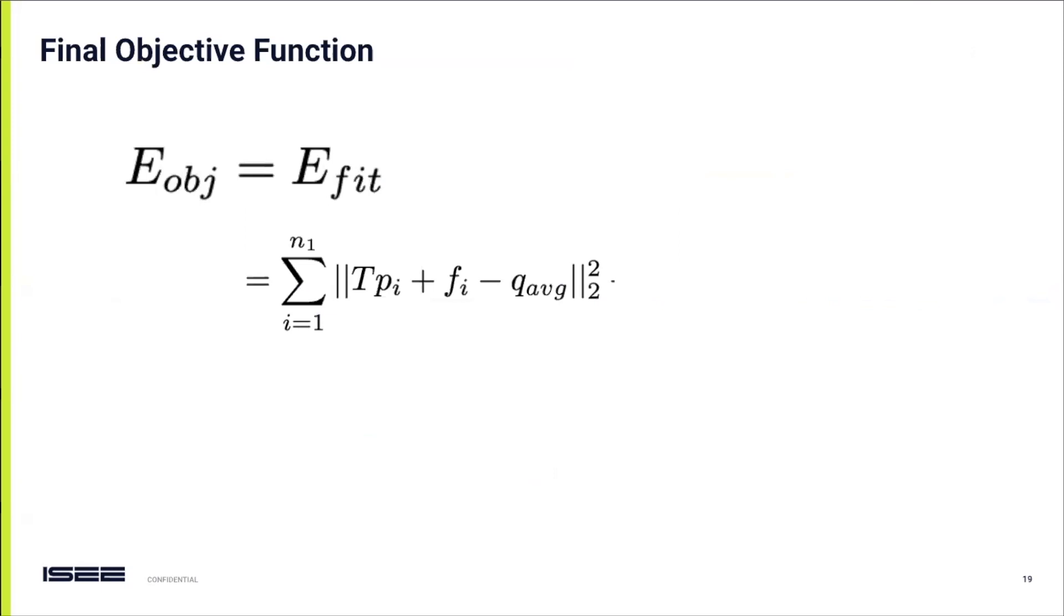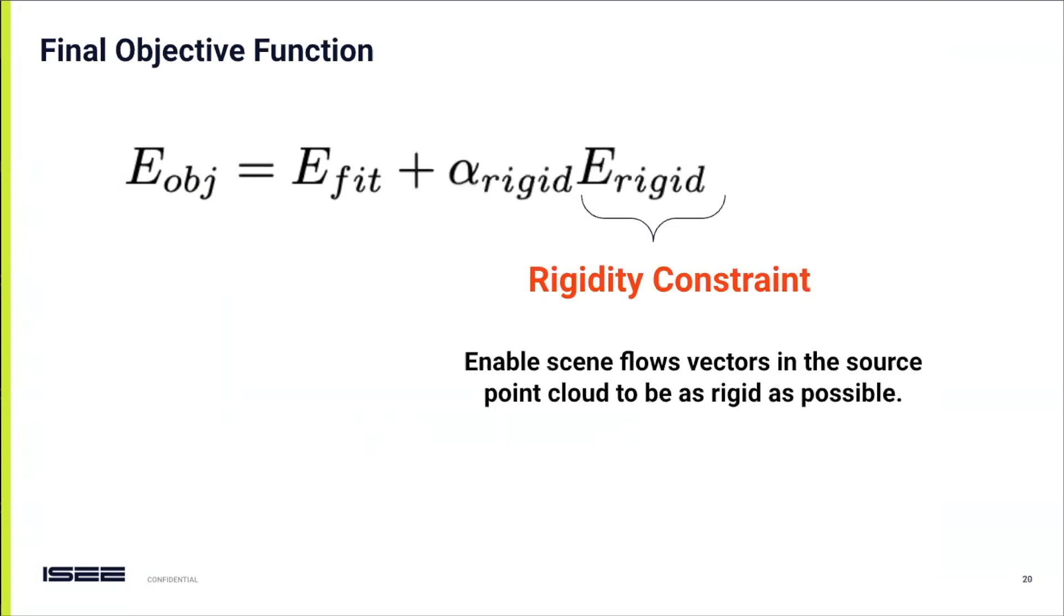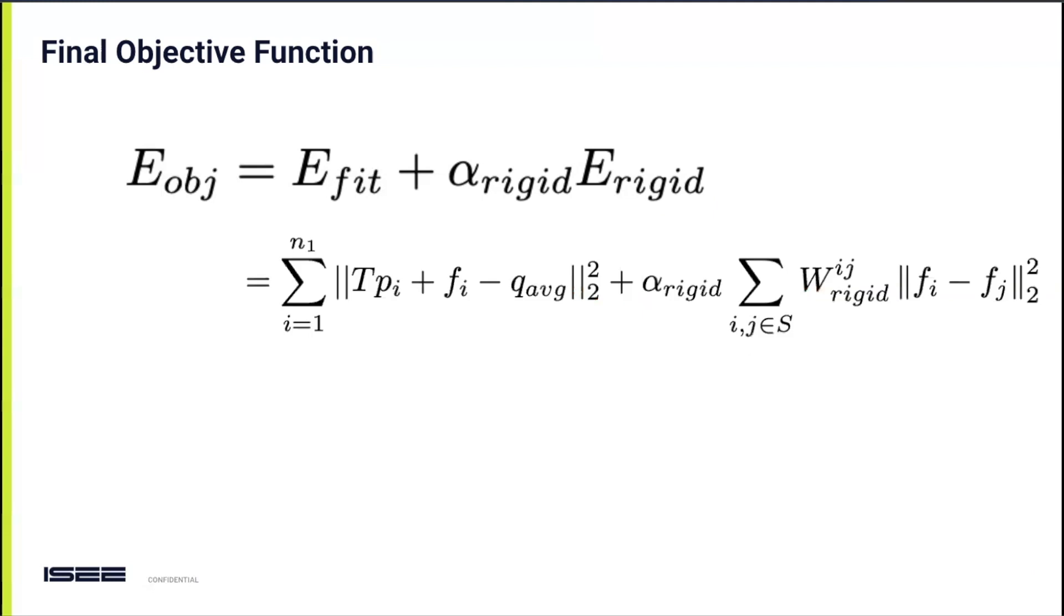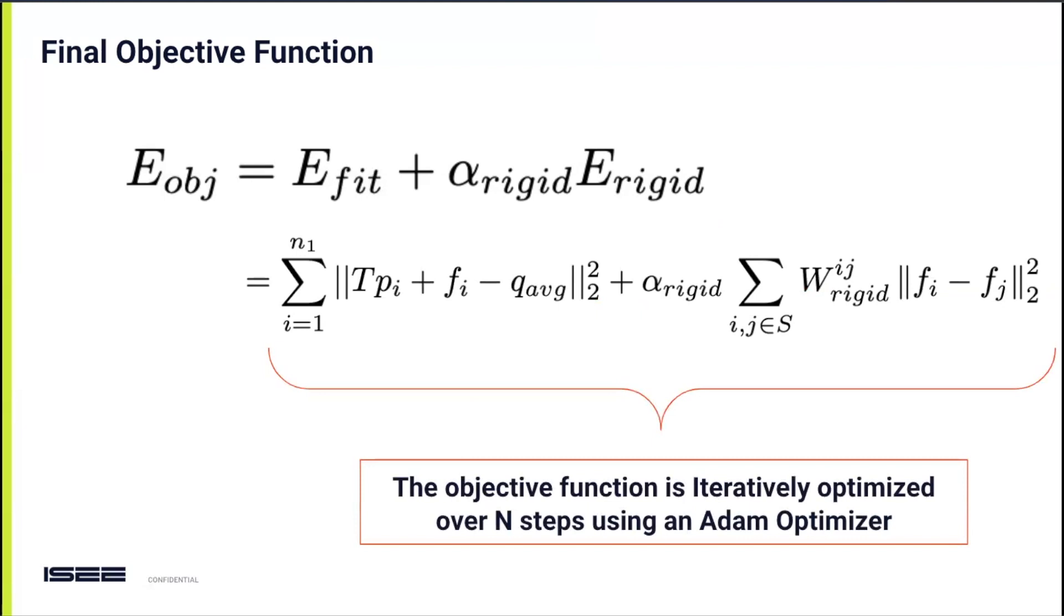With these adjustments, our objective function underwent yet another transformation, which looks like this. However, we introduced an additional element to enhance the flow robustness: the rigidity constraint loss. This constraint ensures that scene flow vectors in close proximity to one another maintain as much rigidity as possible. It's a critical factor in preserving the structural integrity of the scene flow estimation. So with the rigidity constraint added, our final objective function takes shape. We engage in an optimization process over n steps, typically ranging around 100 to 500 steps, utilizing an Adam optimizer to minimize the objective. The flow values we derive at the conclusion of this process are our definitive scene flow vectors.